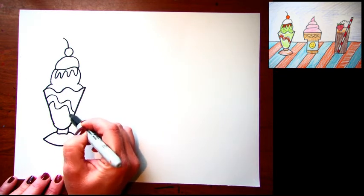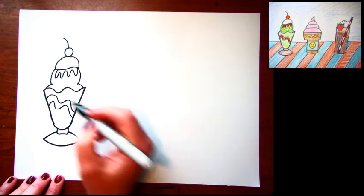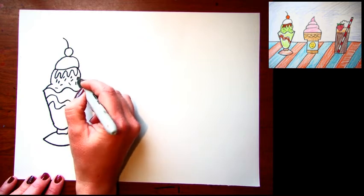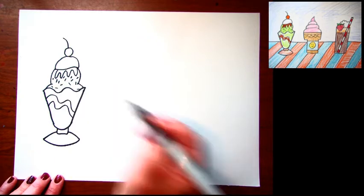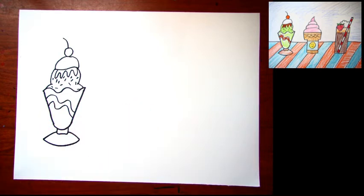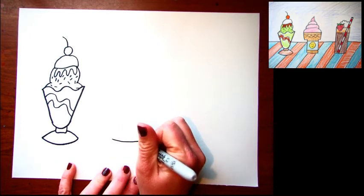Maybe a few little chocolate chips or sprinkles. Now I have my first ice cream, I'm gonna move on to my next one. The next one I'm gonna do right in the middle of my paper. This time I'm gonna make a creamy or a soft serve ice cream in a cone. This is what I always order.